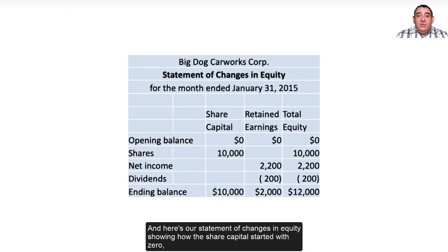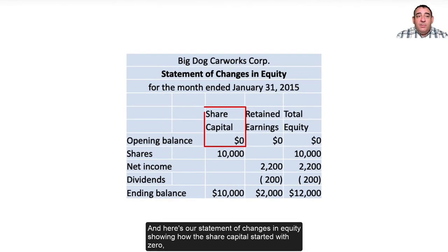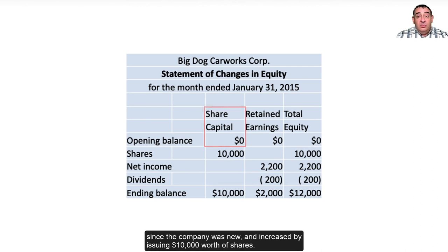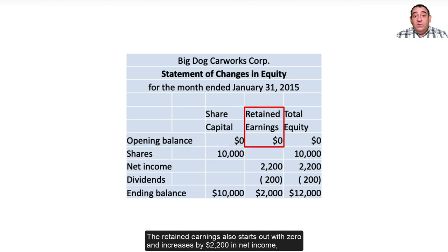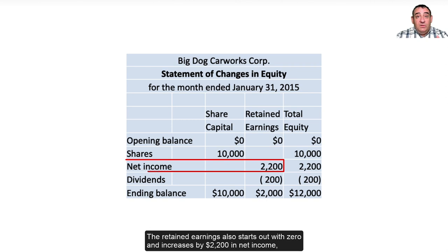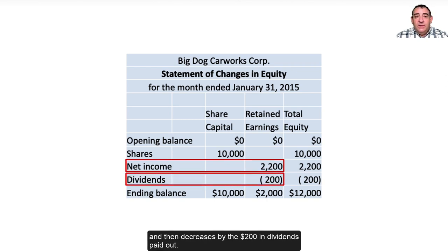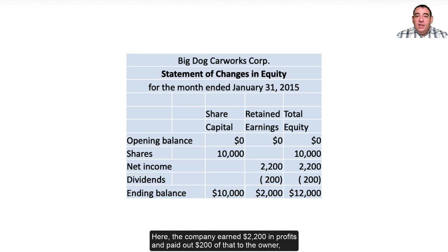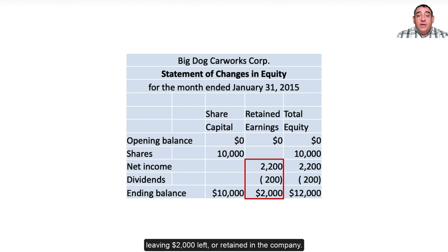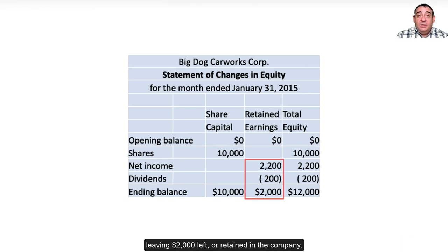Here's our statement of changes in equity, showing how the share capital started with zero since the company was new, and increased by issuing $10,000 worth of shares. Retained earnings also starts at zero, increases by $2,200 in net income, and then decreases by the $200 in dividends paid out. The company earned $2,200 in profits, paid out $200 to the owner, leaving $2,000 retained in the company.